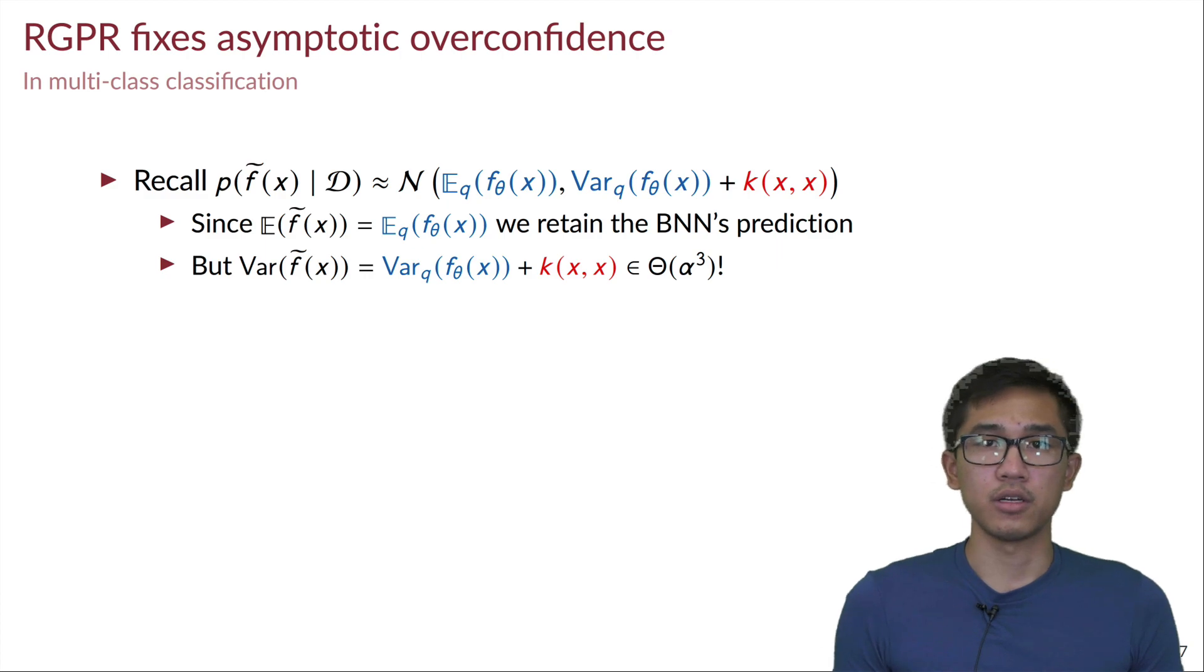And secondly, the variance of RGPR, because we have an additional term given by the cubic spline kernel, we have a cubic variance instead of the standard quadratic variance growth in the vanilla Bayesian neural network.